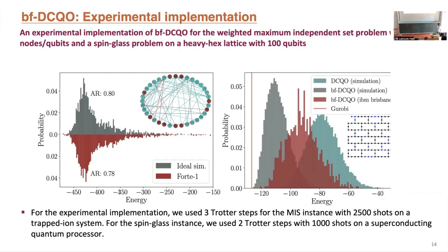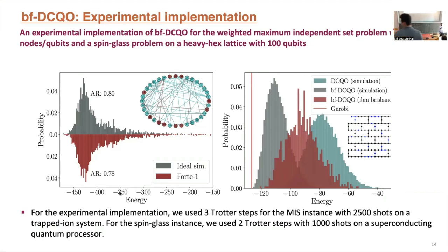Question: Can you comment on how local or non-local the counter-diabatic driving needs to be in terms of the tensor-product structure of Hilbert space for a many-body system? Answer: For the example shown, the problem Hamiltonian has only quadratic terms, and the first-order commutator is also quadratic — matching the locality of the problem Hamiltonian. Going to second order gives four-local terms. As you go to higher order the locality increases, and how it increases depends entirely on the problem Hamiltonian.